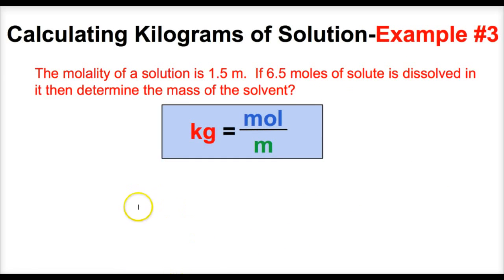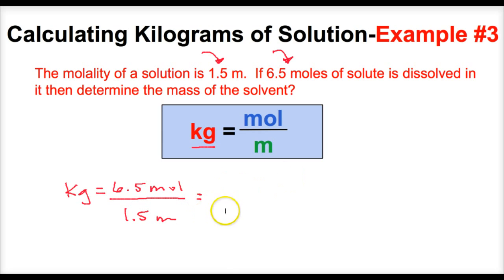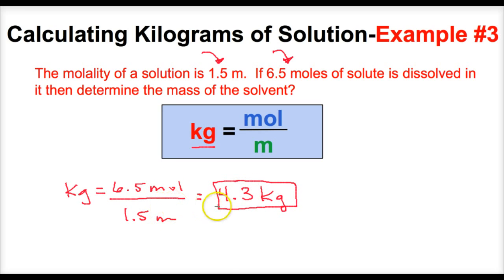In the third example: the molality of a solution is 1.5 m and 6.5 moles of solute is dissolved in it — determine the mass of the solvent. To find kilograms of solvent, we take the moles of solute, 6.5, and divide by the molality, 1.5. With the appropriate number of sig figs, we get 4.3 kg. So the mass of the water is 4.3 kg.